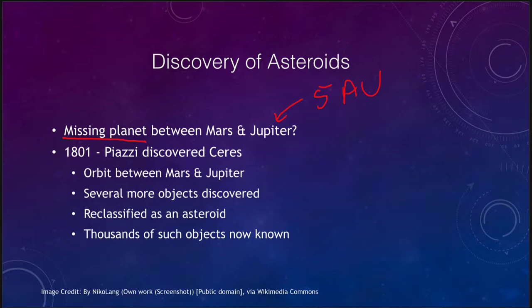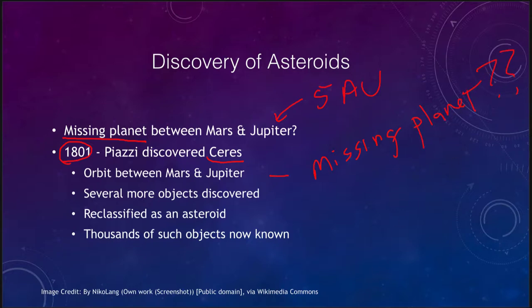So it was thought that maybe there was some kind of missing planet there. In 1801, Piazzi discovered Ceres, an object that orbited in between Mars and Jupiter, and it was thought maybe this was that missing planet. However, very shortly thereafter, several more objects were discovered with similar properties. So Ceres, which was originally considered the new planet — not long after Uranus had been discovered — was reclassified as the largest asteroid. And of course, Ceres is now known as one of the dwarf planets in the solar system.